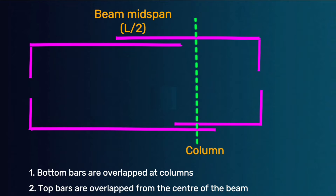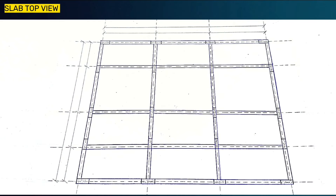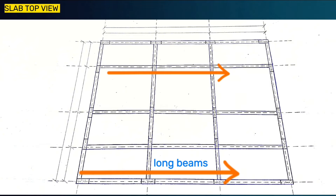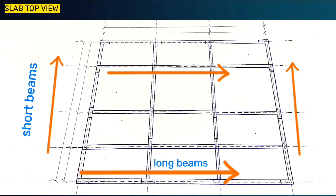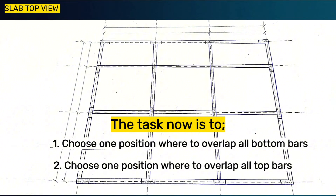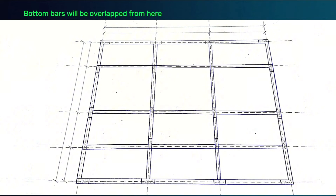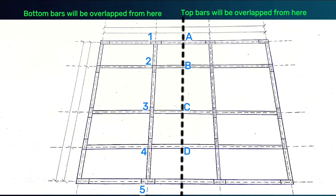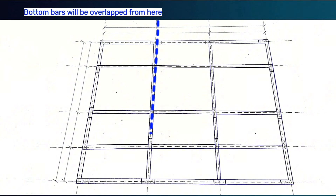Consider the top view of the slab with long beams along the x-axis and other beams along the y-axis with columns at each intersection. Choose one position to overlap all bottom bars and one position to overlap all top bars. All bottom bars will be overlapped from the positions of columns 1, 2, 3, 4, 5, whereas all top bars will be overlapped from the center of the beams at positions A, B, C, D, and E. From our building, we choose one position for overlapping all bottom bars and another for all top bars.